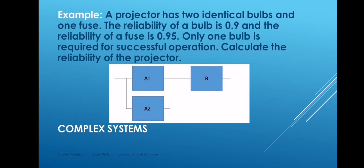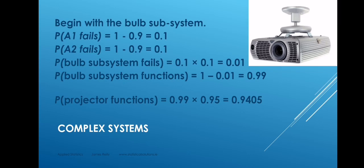So the bulb reliability is 0.9. We calculate the unreliability of each bulb as 0.1. The unreliability of the bulb subsystem as 0.01, and the reliability of the bulb subsystem as 0.99. So those two bulbs in parallel behave in the same way as a single bulb which has a reliability of 0.99. That's the reliability of the bulb subsystem. That bulb subsystem is then arranged in series with the fuse, which has reliability 0.95. So we multiply these two probabilities together to get 0.9405, which is the overall reliability of the system. You can read more about this in the textbook in section 2d reliability.